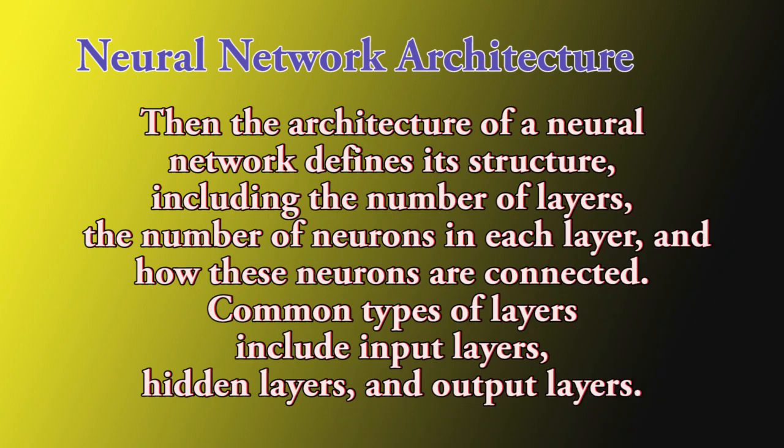Neural network architecture: The architecture of a neural network defines its structure, including the number of layers, the number of neurons in each layer, and how these neurons are connected. Common types of layers include input layers, hidden layers, and output layers.